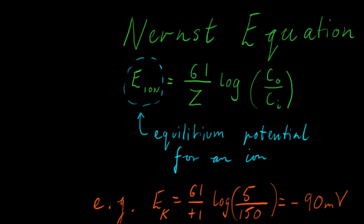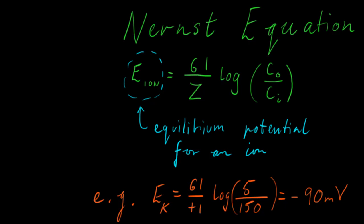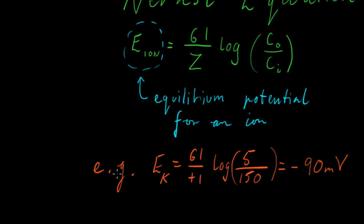Now I want to introduce you to a couple of equations. The first one is the Nernst equation. If we are given the concentration outside the cell and the concentration inside the cell, and we know these two values, we can plug them in and find out what the equilibrium potential will be for a particular ion. I'll run through the equation with this example — potassium. It's equal to 61, which is a constant related to physical constants and the temperature of the human body, divided by plus 1, which is the charge, or Z. We've got the log of the concentration outside the cell — in this case for potassium it's 5 millimoles per litre — and inside it's 150. And this equals negative 90 millivolts.